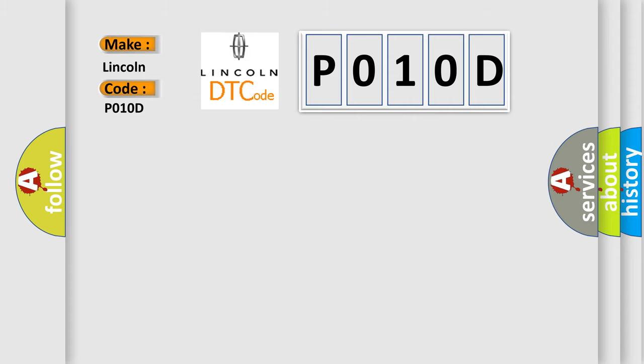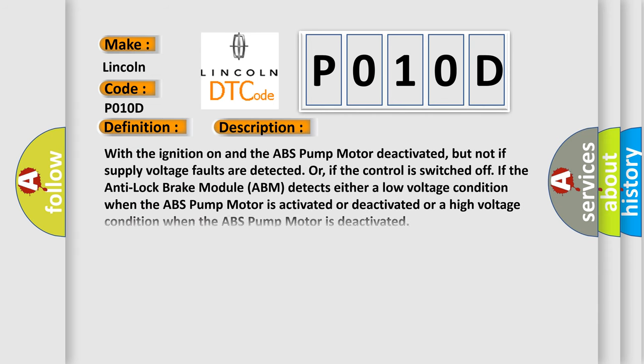The basic definition is ABS pump motor supply low voltage. Here is a short description of this DTC code: With the ignition on and the ABS pump motor deactivated, but not if supply voltage faults are detected or if the control is switched off, if the Anti-Lock Brake Module (ABM) detects either a low voltage condition when the ABS pump motor is activated or deactivated, or a high voltage condition when the ABS pump motor is deactivated.